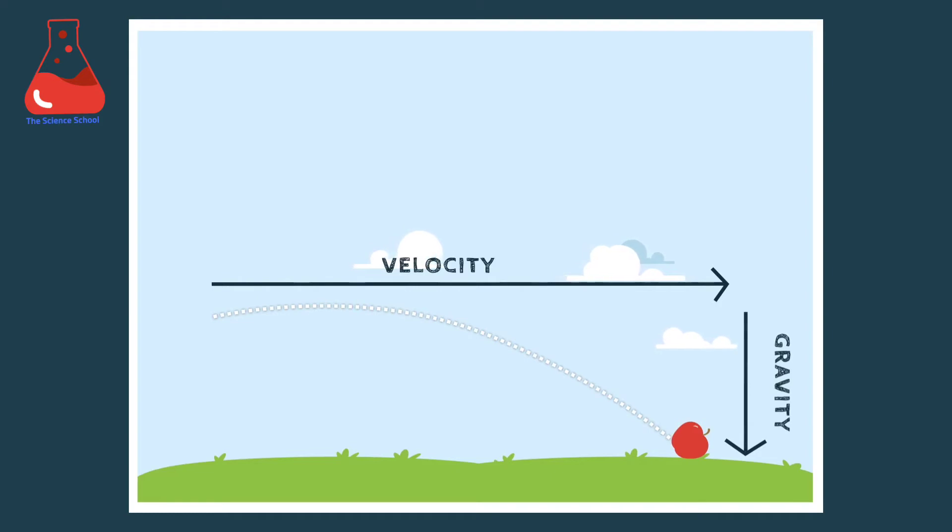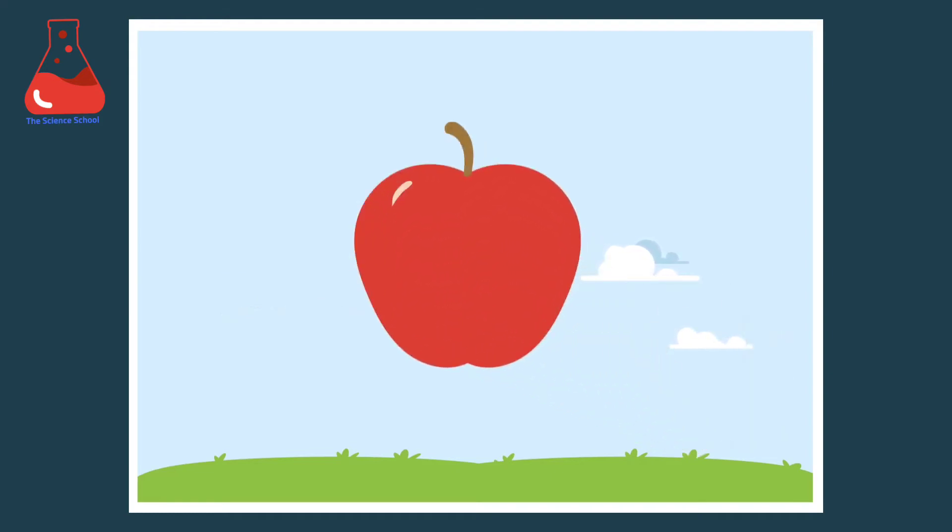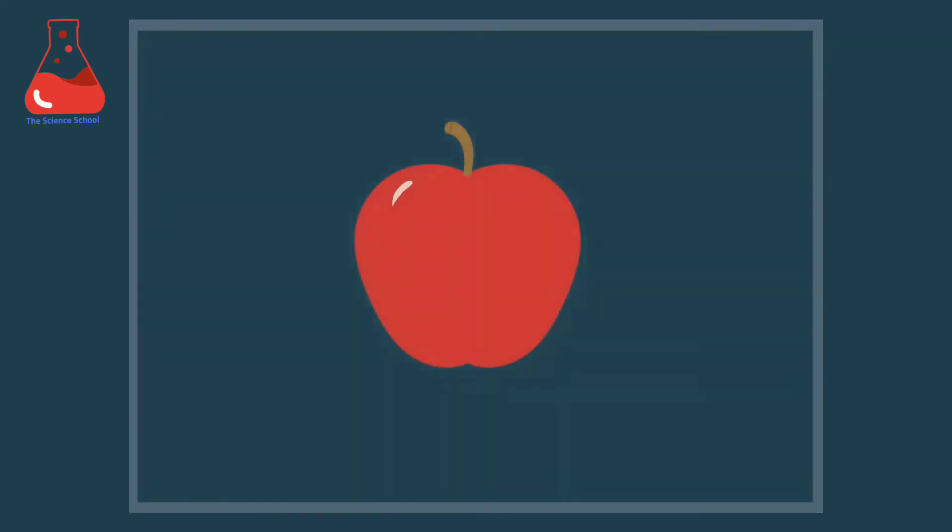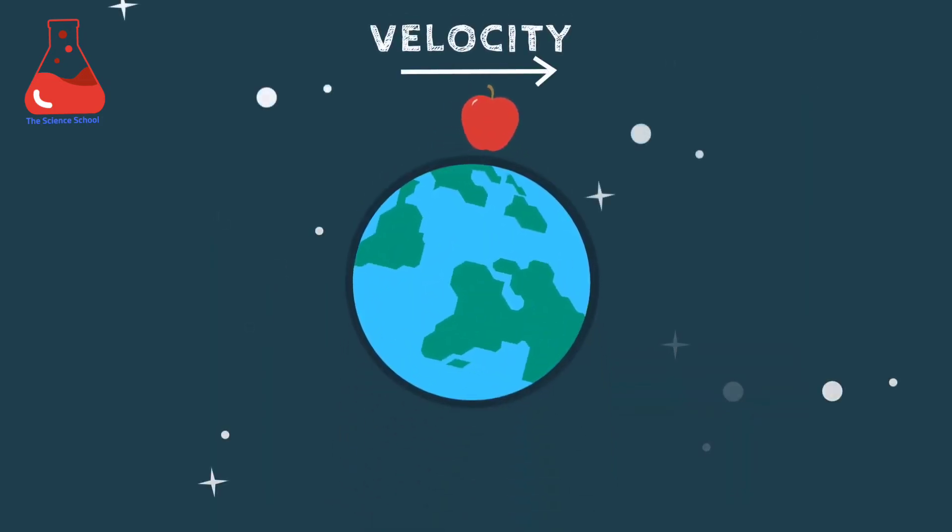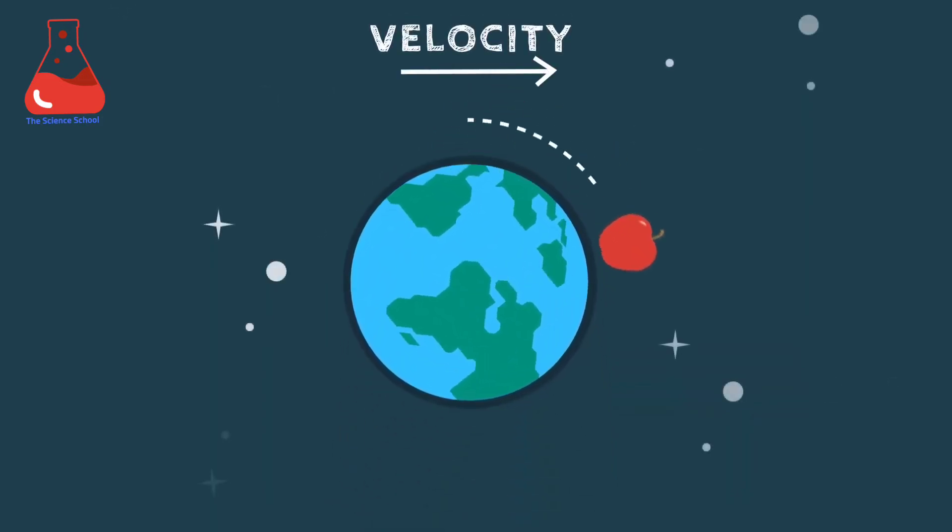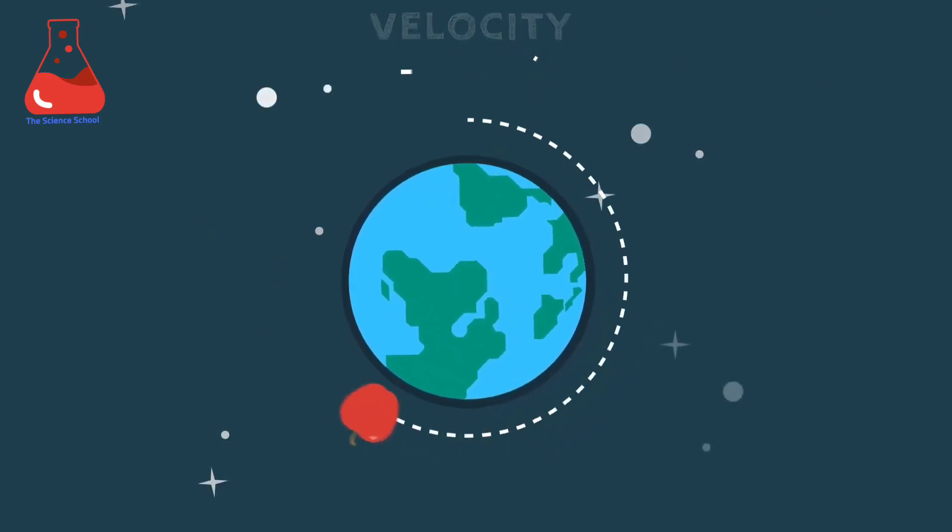Now imagine this: you are in space outside of Earth's atmosphere. If you throw the apple again with enough speed, the apple will take a much longer path and eventually make a complete circle.